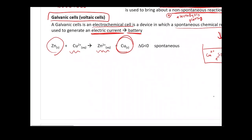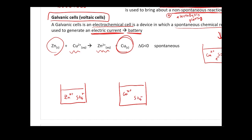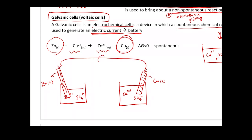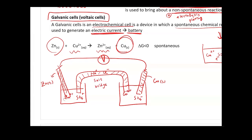What if instead we use two separate solutions? One contains Zn²⁺ and SO₄²⁻, and the other contains Cu²⁺ and SO₄²⁻. We place a zinc solid in one and a copper solid in the other. We connect the two plates with a wire, mount a voltmeter in between, and place a salt bridge between the two solutions. The salt bridge contains electrolyte — sodium and chloride ions — and allows ions to diffuse freely between the two sides, forming a complete loop.